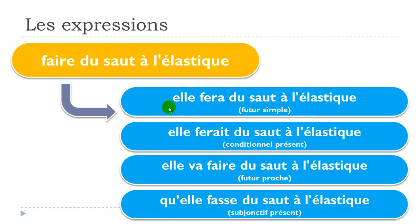'Elle fera du saut à l'élastique' is the future simple. 'Elle ferait du saut à l'élastique' is le conditionnel présent. 'Elle va faire du saut à l'élastique' is the futur proche. 'Qu'elle fasse du saut à l'élastique' is the subjonctif présent.